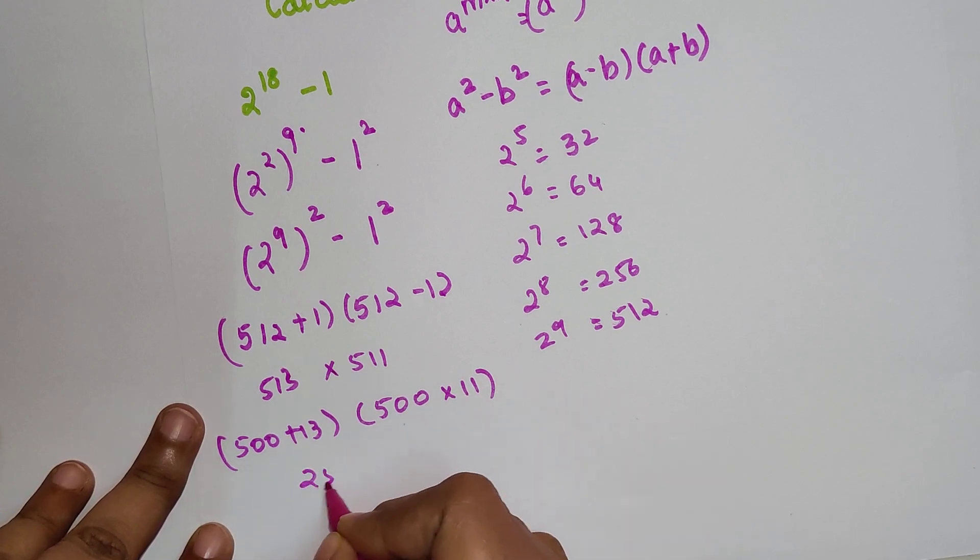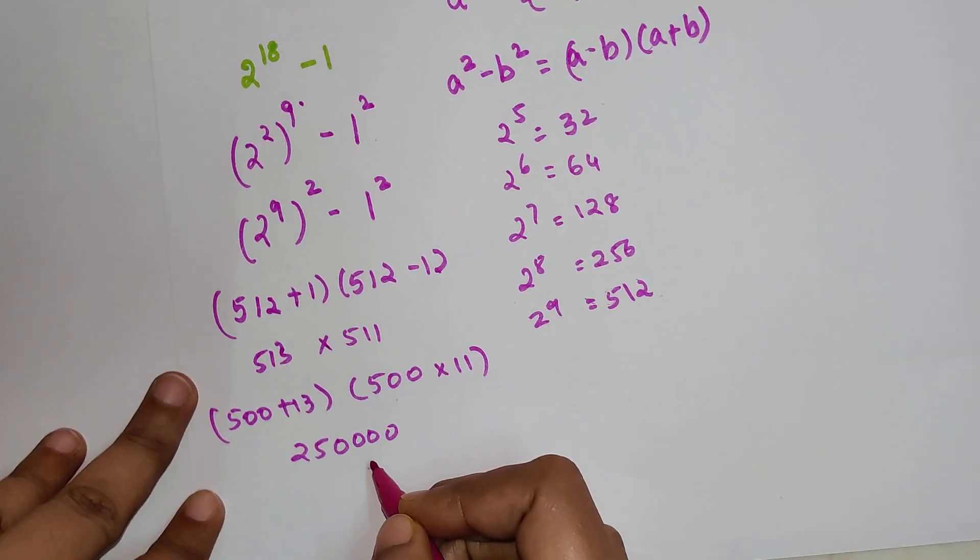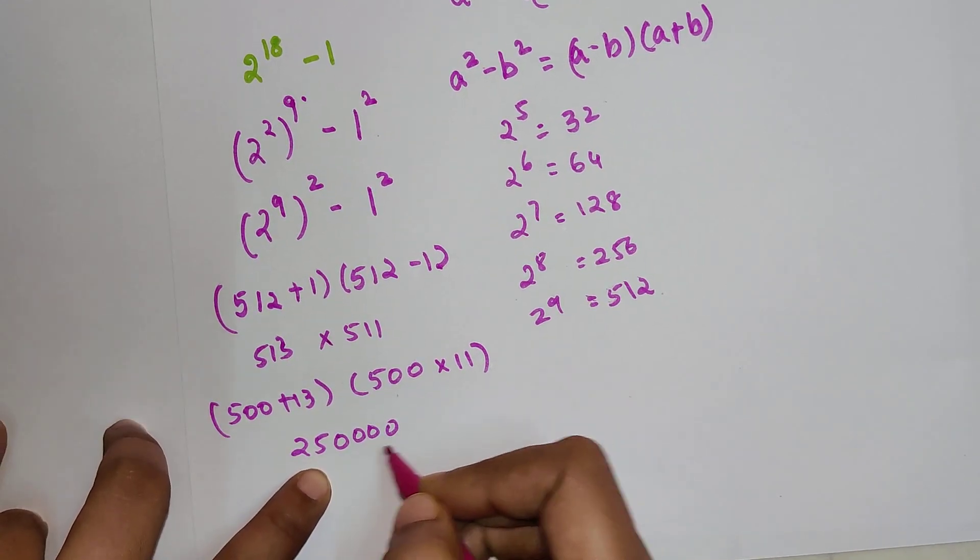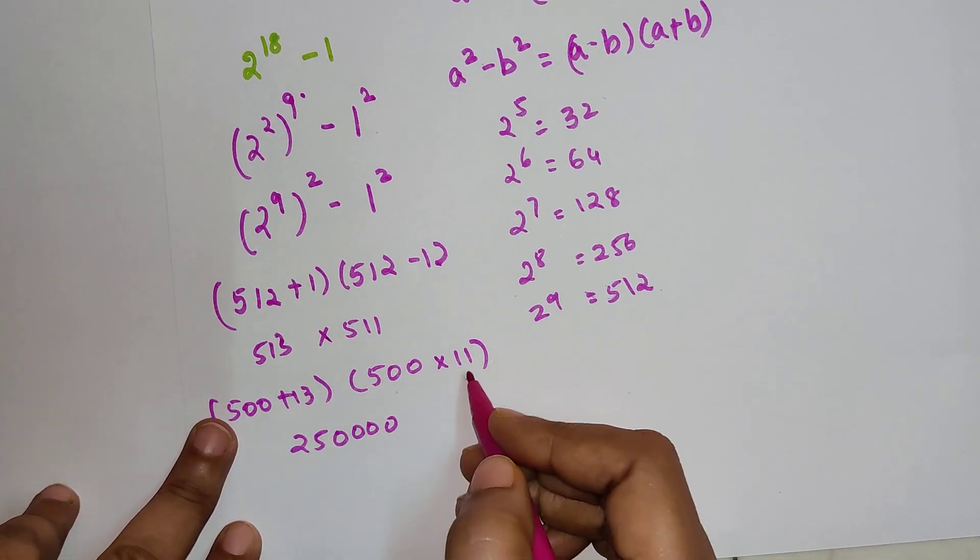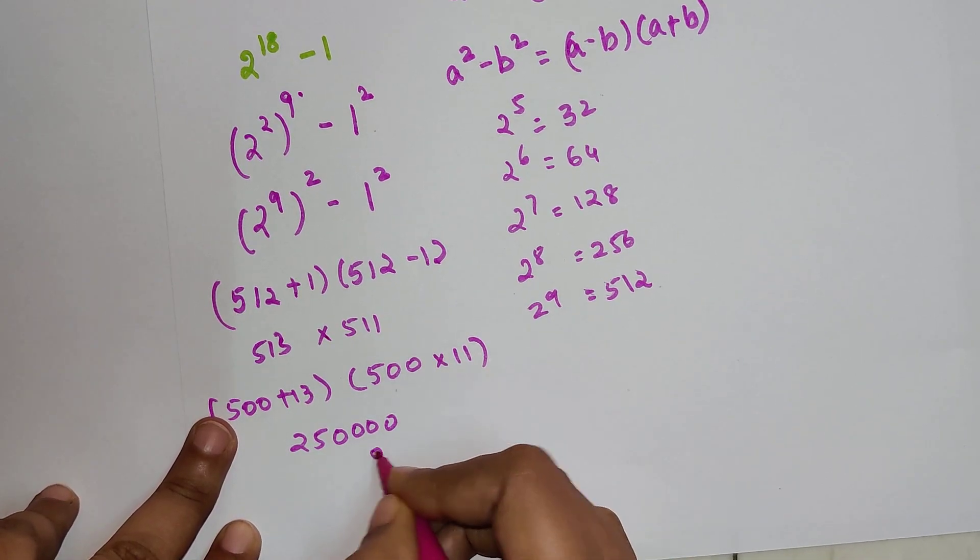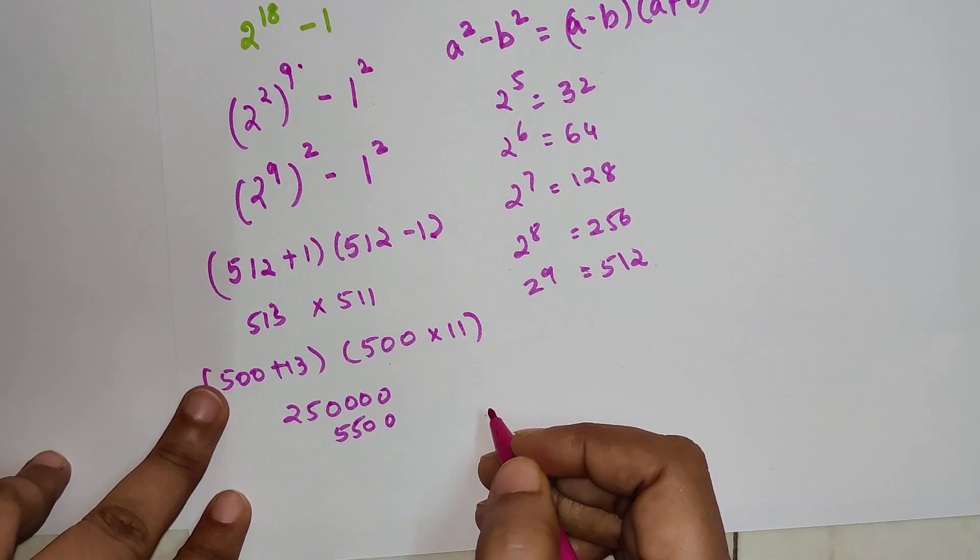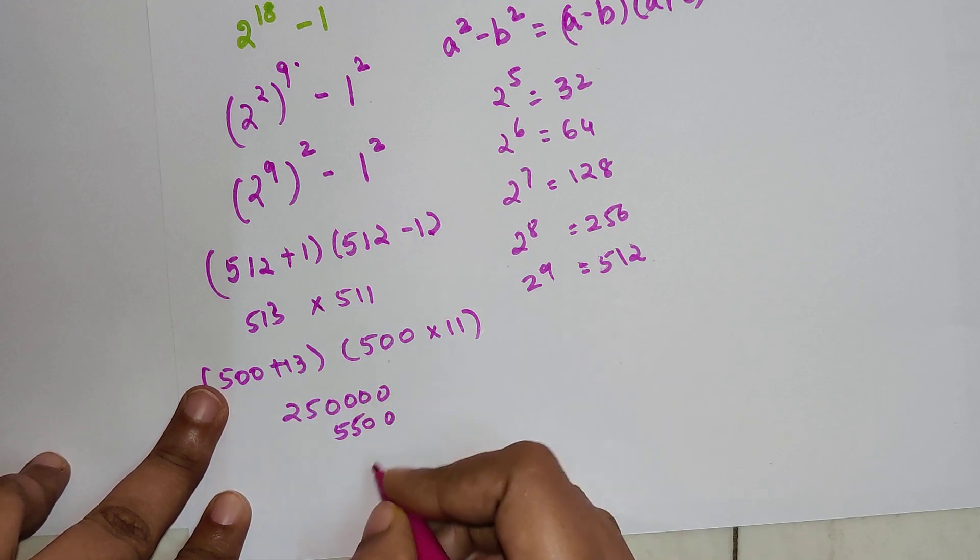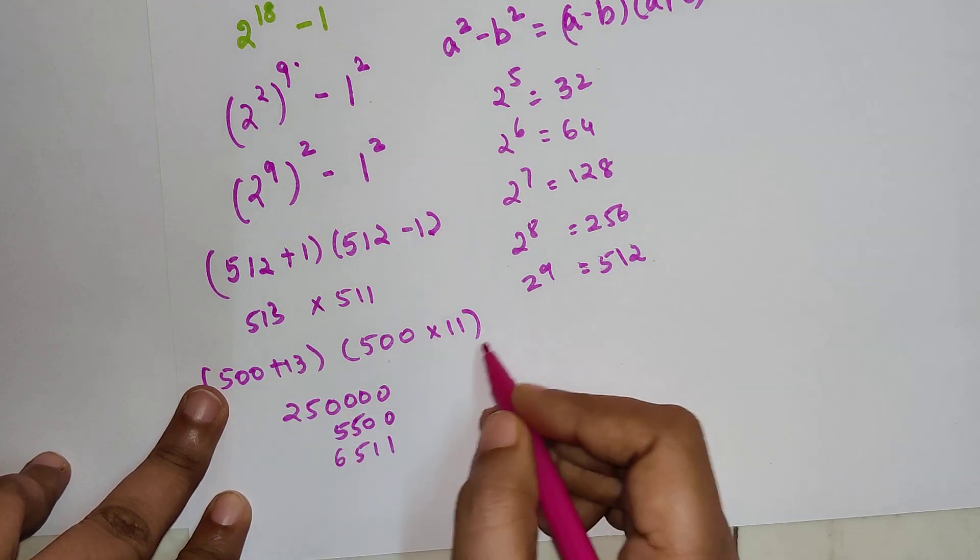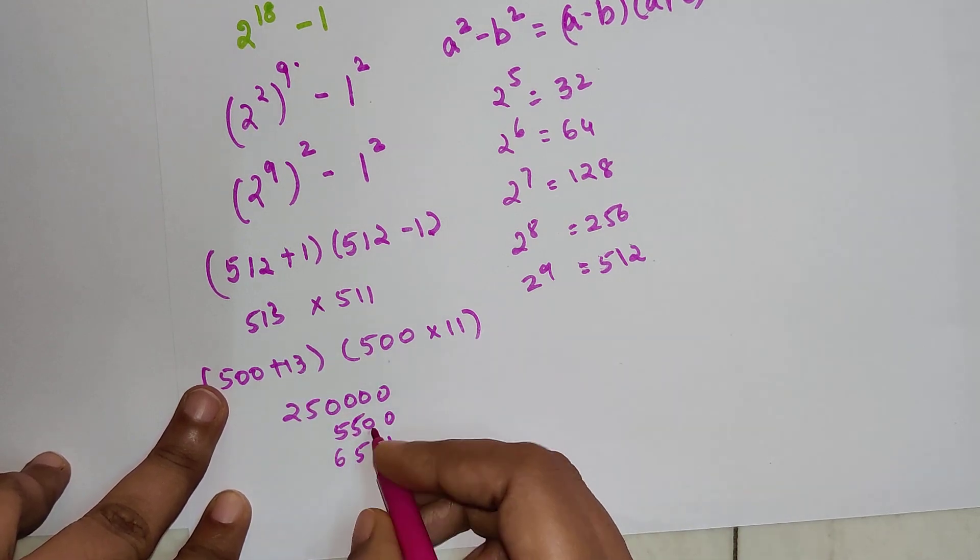500 into 500 is 2,50,000. Correct. And now 500 into 11 will get you double 0 over here and 55, so 5,500. Now 13 into 500 will get you 6,500, and 13 into 11 is nothing but 143.